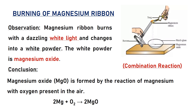This reaction is a combination reaction, because magnesium is an element and oxygen is also an element — two elements combine together to form a compound. So this reaction comes under combination reaction.